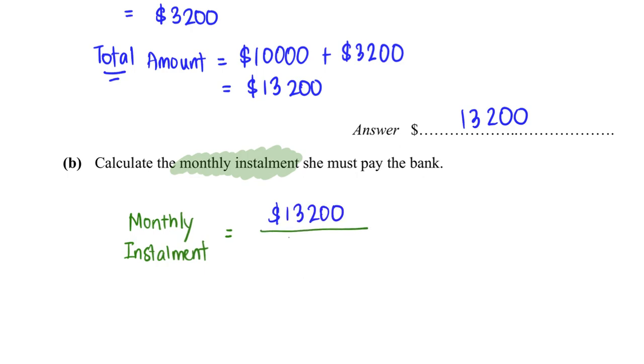...dividing by four years, but since this is in terms of months and one year has 12 months, I'm going to multiply by 12. This will give us the number of months, and therefore the final answer is $275.